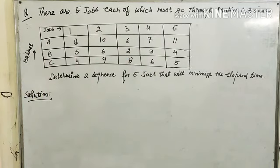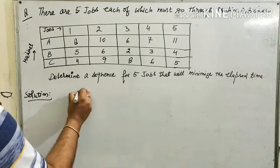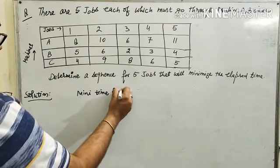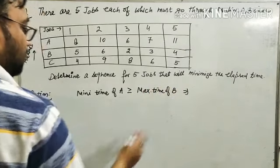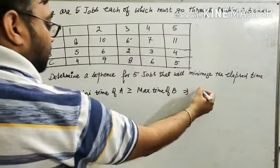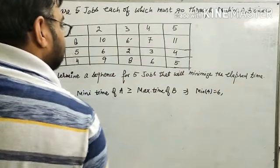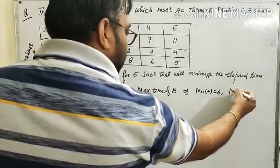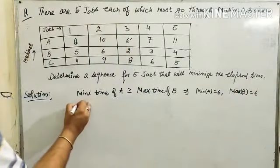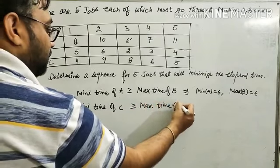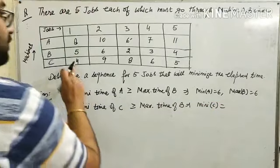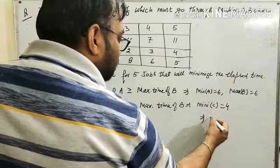As I said earlier, we have to convert 3 machines into 2 machines. But to convert them, we first have to check the conditions. The first condition: minimum time of A must be greater than or equal to maximum time of B. Minimum A is equal to 6, and maximum B is also 6. The second condition: minimum time of C must be greater than or equal to maximum time of B. Minimum time of C is 4. So from here, both conditions are fulfilled.